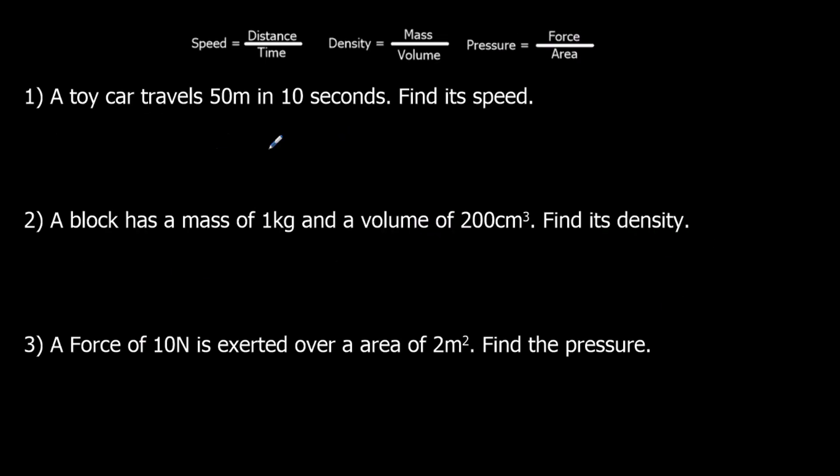Okay, so a toy car travels 50 meters in 10 seconds, find its speed. Speed equals distance over time. The distance is 50, the time is 10. So 50 over 10, so that's 5. And it's meters over seconds, so it's meters per second.